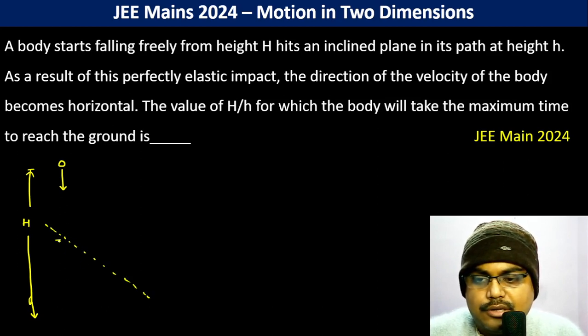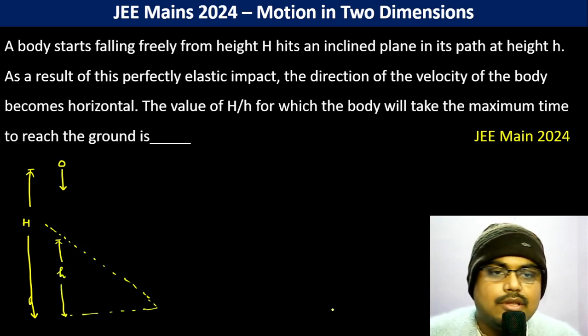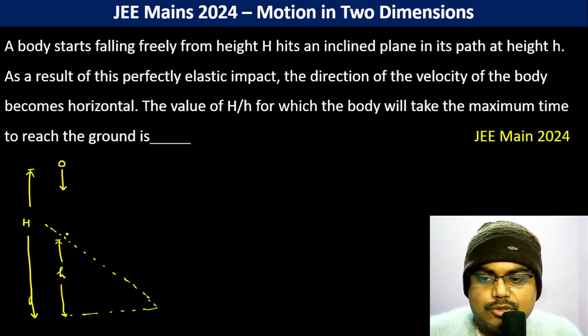It hits the inclined plane at height h. As a result of this perfectly elastic impact, the direction of the velocity of the body becomes horizontal.